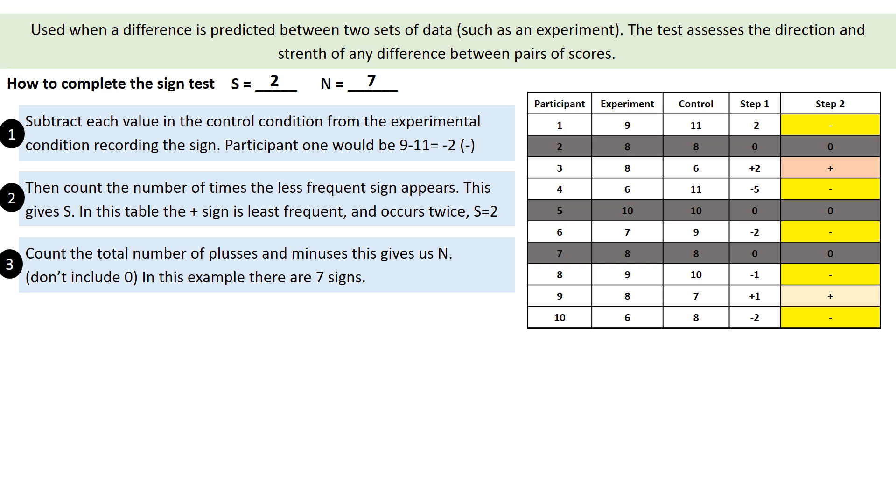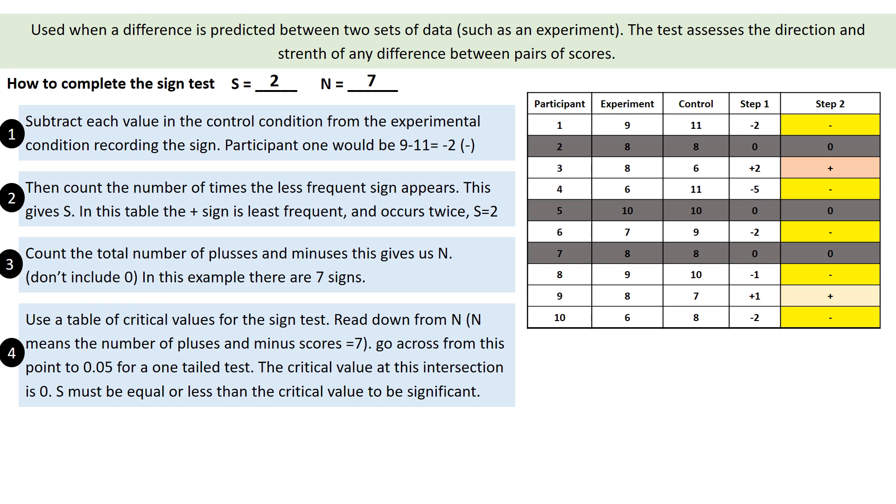Now we can work out whether our data is significant or not. So we're going to look now at a table of critical values for the sign test. We're going to read down from N, number of participants, until we get to the number we want, which is seven. We're going to go across from seven to the column which has 0.05 for a one-tailed test. So we're going to say this is directional, so the critical value at this point...